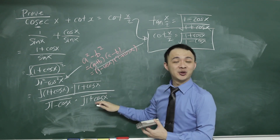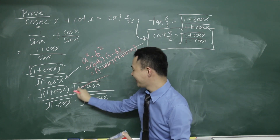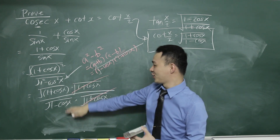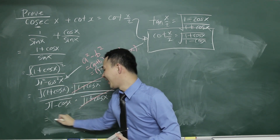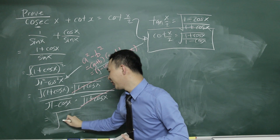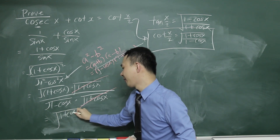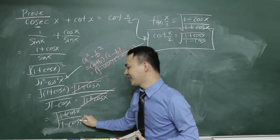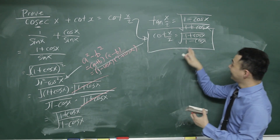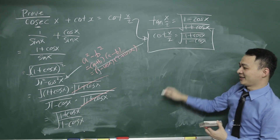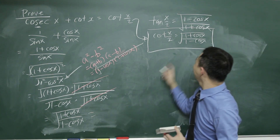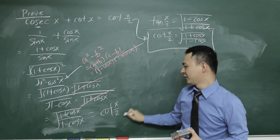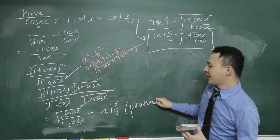You can see these two matching terms — square root of 1 plus cos x — cancel between numerator and denominator. Joining the remaining terms together, I get square root of 1 plus cos x over 1 minus cos x. And this is exactly the same as cotangent x over 2, so the whole thing proves cotangent x over 2. True.